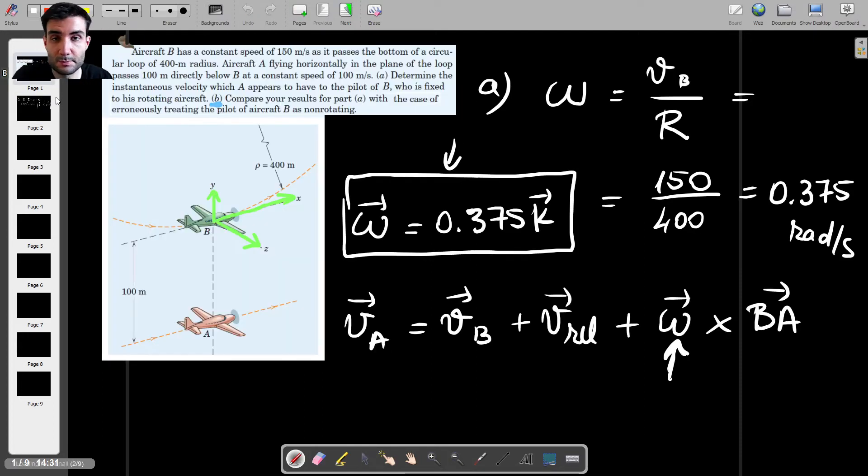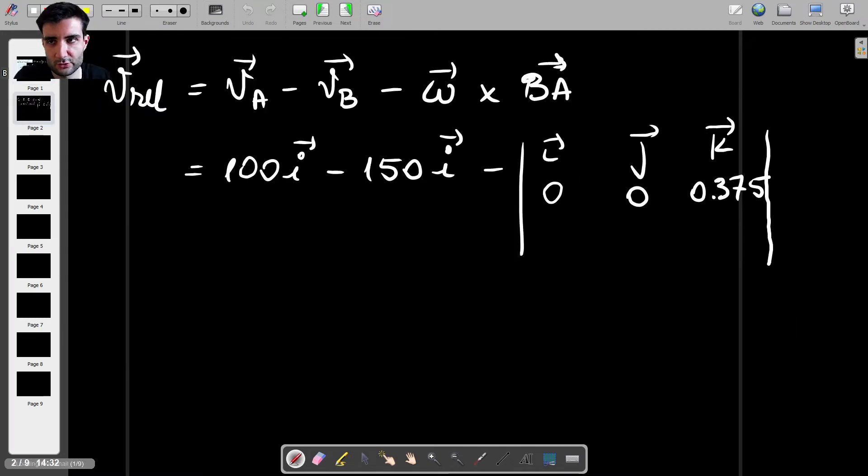And then BA is the position vector of A with respect to B. So we know what that is. It's 100 meters, and it's in the negative Y direction with respect to B, meaning that that would be 0 minus 100 and 0 again.